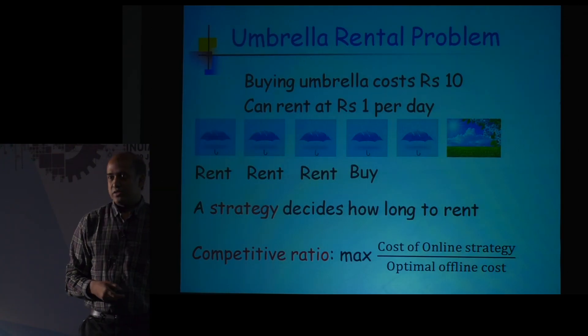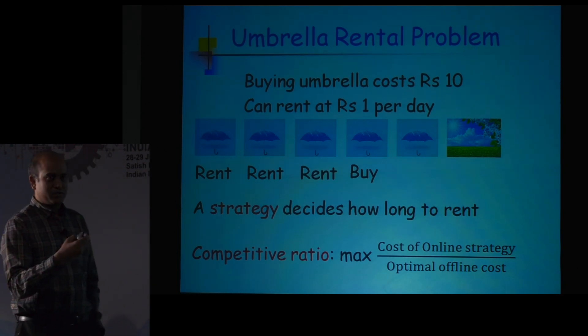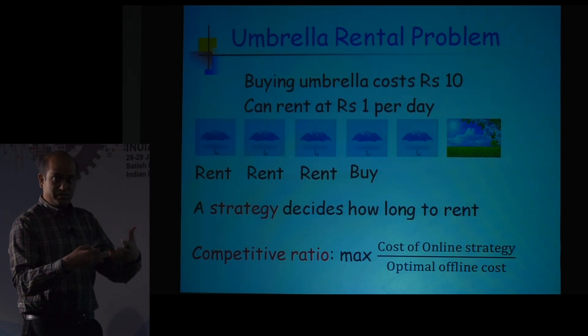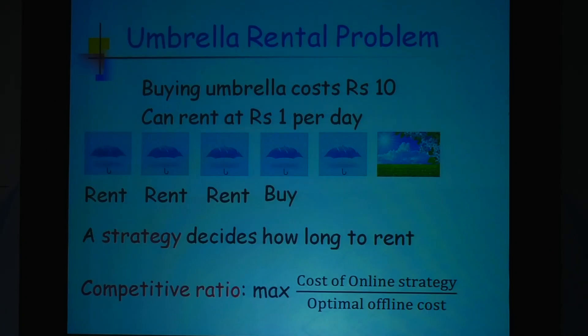The way we measure performance in the algorithms community is what is called a competitive ratio. Think of it as a ratio of how much money your own strategy — which does not know the future — pays, with respect to somebody who knew the entire future. In this setting the ratio would be 1.3, because you are paying 13 rupees while someone who knew the future would have paid 10 rupees.